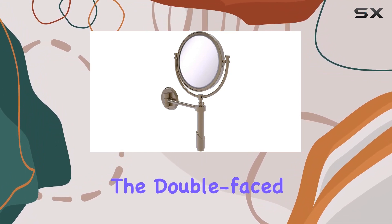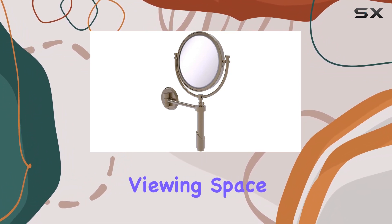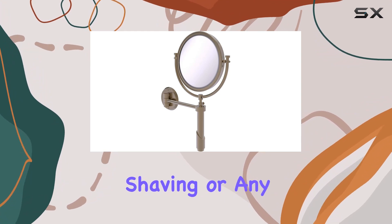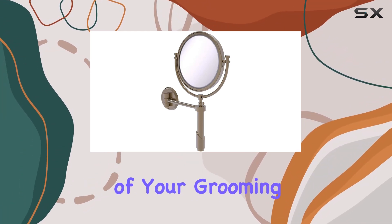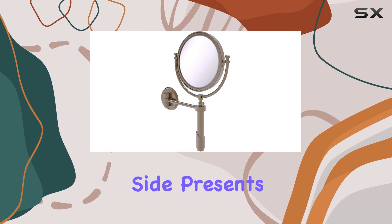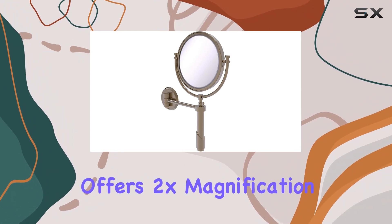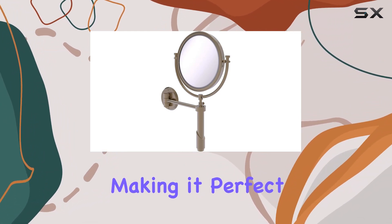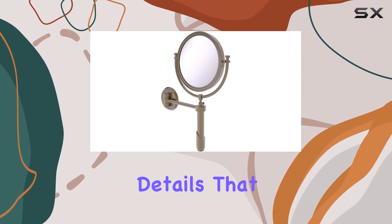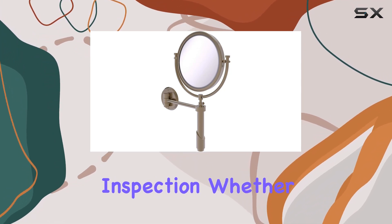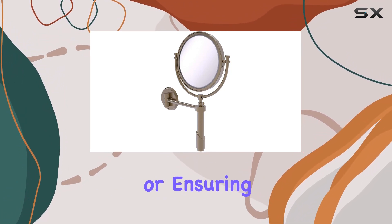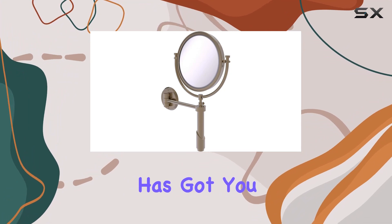With an 8-inch diameter, the double-faced mirror glass offers ample viewing space for makeup application, shaving, or any other aspect of your grooming routine. One side presents a true reflection, while the other offers 2X magnification, making it perfect for those finer details that require closer inspection. Whether you're perfecting your eyeliner or ensuring a smooth shave, this mirror has got you covered.